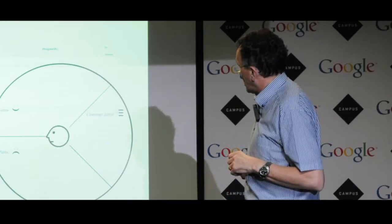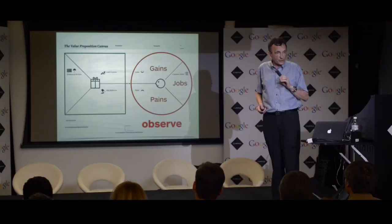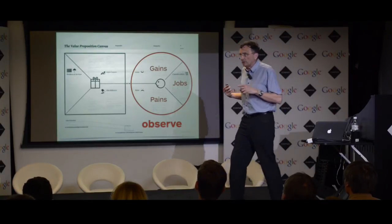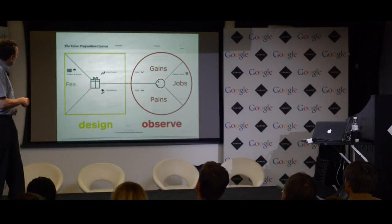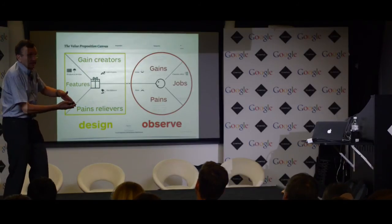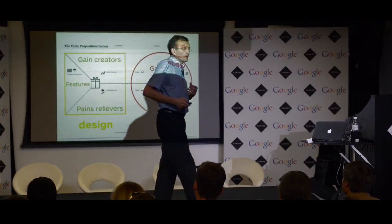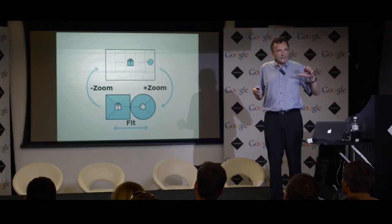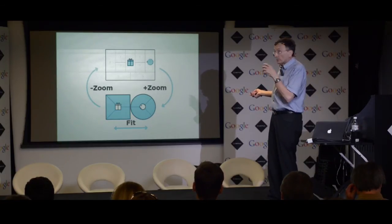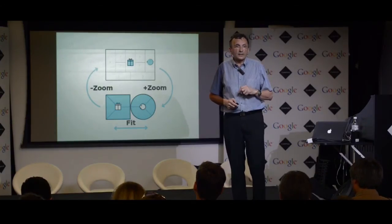This value proposition canvas is not independent — it's a back-and-forth mechanism between the big business model canvas and a zoom-in view. You zoom in to design the value proposition and customer profile, then zoom out to check how it fits in the broader business model. You zoom in, zoom out, zoom in, zoom out — this is the prototyping activity when starting to design a business model.